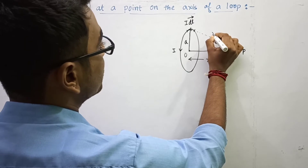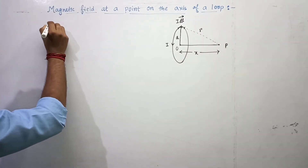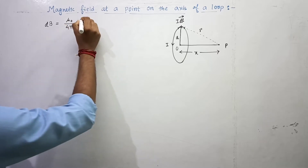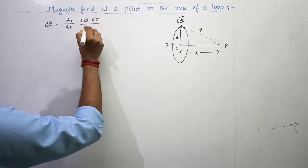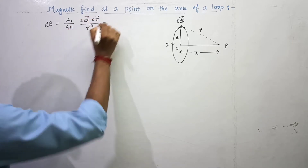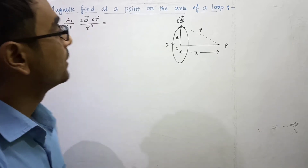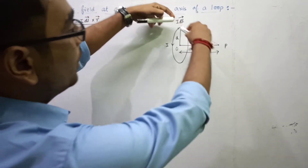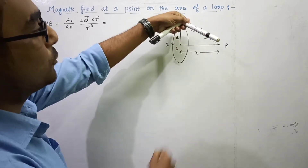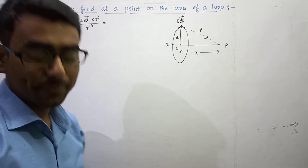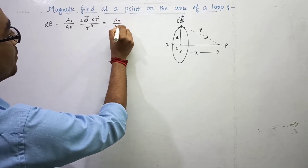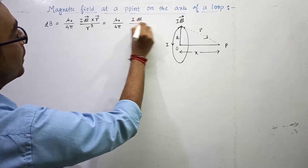Suppose this distance is r. So using Biot-Savart law, dB at point P equals μ₀/4π times (I·dL × r̂)/r². Now the angle between I·dL and r — we can see that I·dL is tangential, and r goes toward point P, so the angle between them is 90 degrees. The cross product gives sin 90° = 1, so dB = μ₀/4π × I·dL / r².